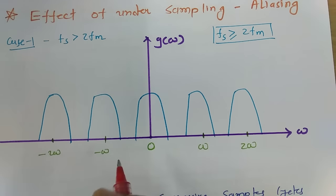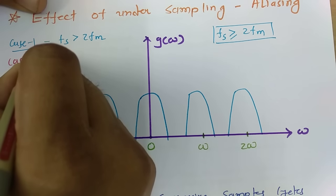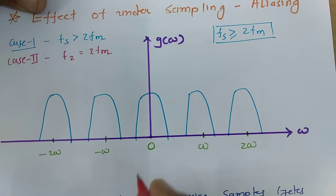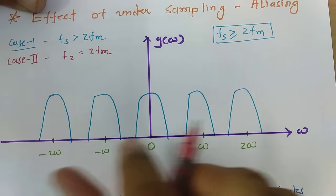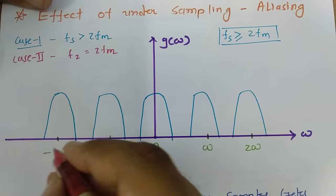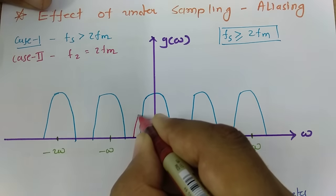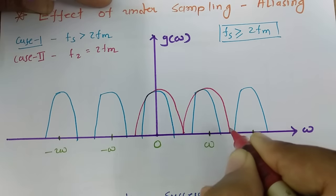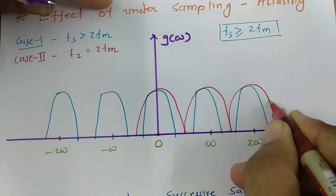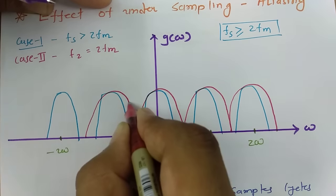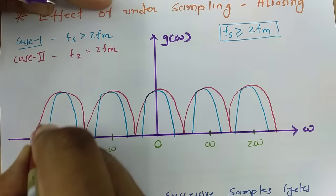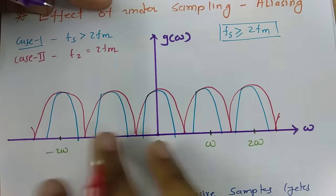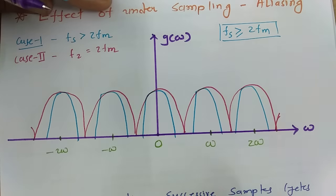Now consider Case 2, where fs equals 2fm. In that case, the samples in the frequency domain will just touch each other. The response will show samples just touching each other, and this continues with infinite samples up to infinite frequency.